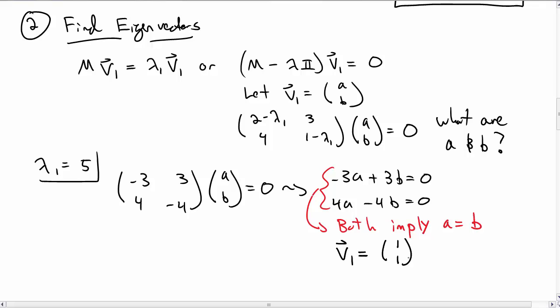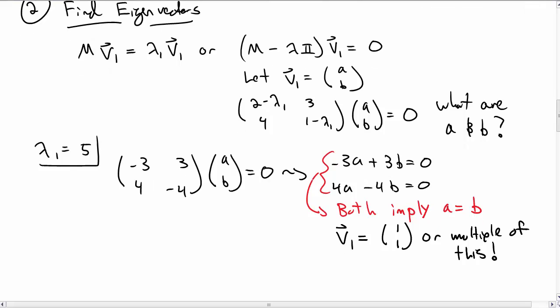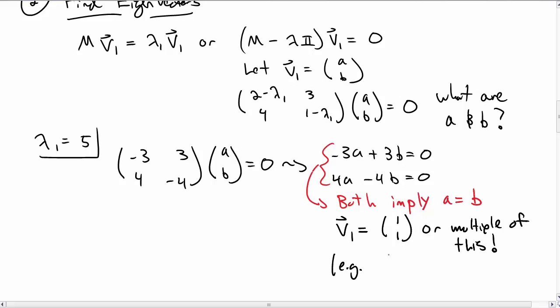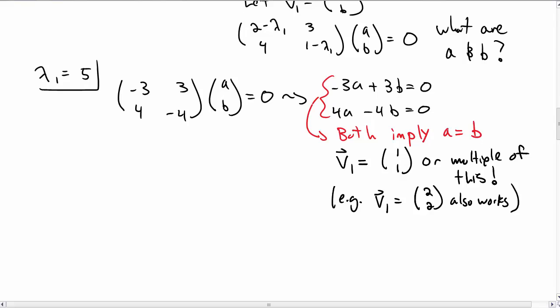So we could choose an eigenvector V1 that looks like (1, 1). Or you could choose any multiple of this if you want. For example you could choose V1 = (2, 2). And that also works. You'll find that it's still an eigenvector with the same eigenvalue. Okay, so that's the eigenvector associated with λ1 = 5.